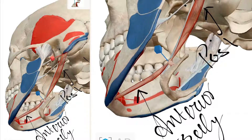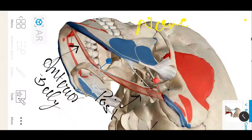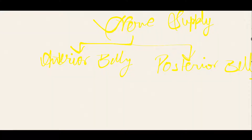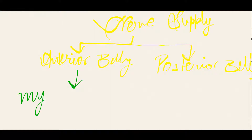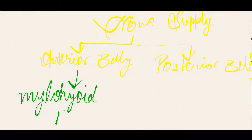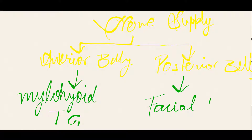If we see the nerve supply of the digastric muscle, the anterior belly and posterior belly are each supplied by a different nerve. The anterior belly is supplied by the mylohyoid branch of the trigeminal nerve, and the posterior belly is supplied by the facial nerve.